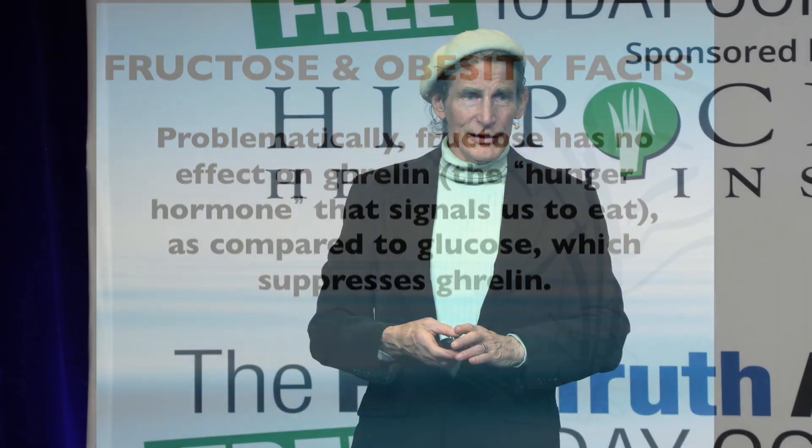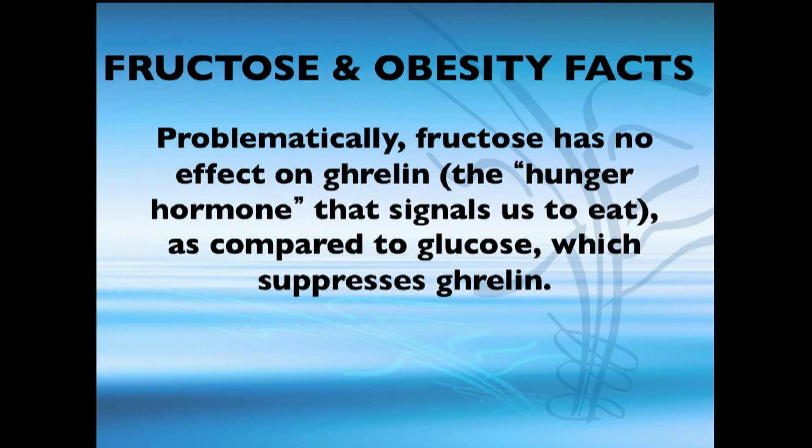The two primary balancing hormones are leptin and insulin, and fructose disrupts their signaling so they can't coordinate effectively. Ghrelin — the hunger hormone — normally signals that you're full, but that doesn't work with fructose. Fructose blocks leptin signaling, which should tell you to stop eating and stop craving sweets. Instead, fructose does the opposite: it says keep eating, store fat, and continue craving sweets.